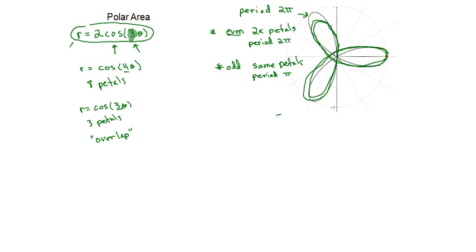If you have your calculator, that's easy to see. But if you don't, you have to understand that. And so, if you have something like r equals cosine of 8θ, I know I'm going to have 16 petals. The entire period is going to be 2π.